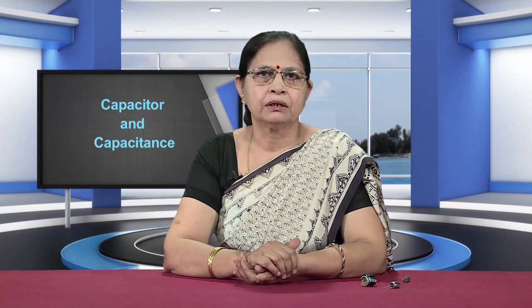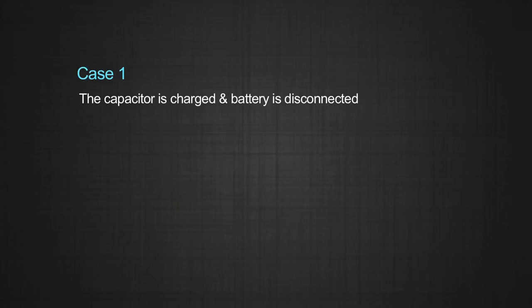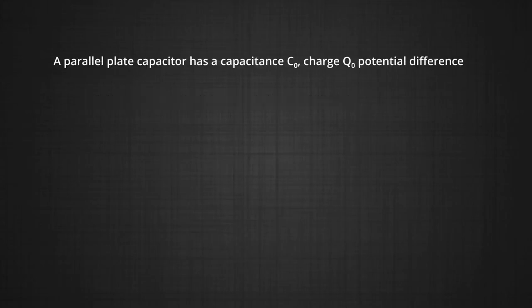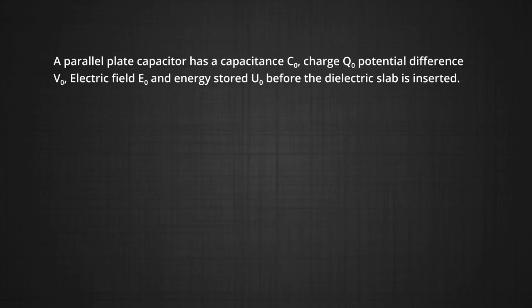Now, let us study the effect of introducing a dielectric in the space between the plates on potential difference, electric field, charge, and energy stored under two different situations. Situation 1: the capacitor is charged and the battery is disconnected. If the parallel plate capacitor has capacitance C₀, charge Q₀, potential difference V₀, electric field E₀, and energy stored U₀ before the dielectric slab is inserted, then Q₀ equals C₀ times V₀, V₀ equals E₀ times D, and U₀ equals half C₀ times V₀ squared.